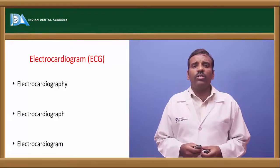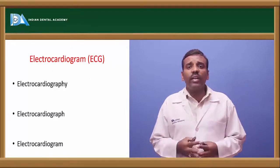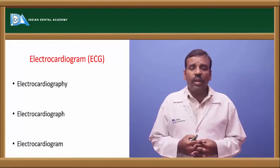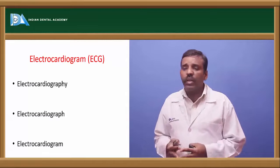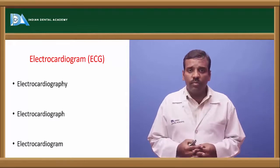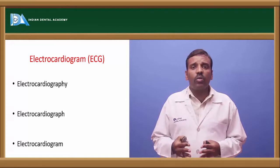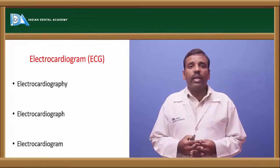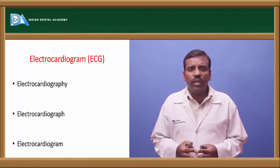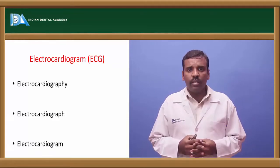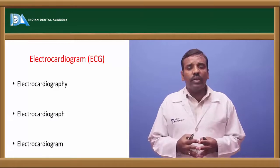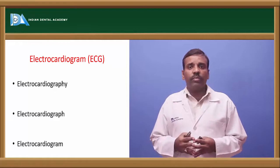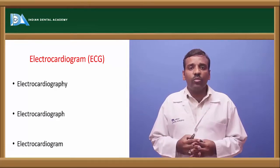ECG is defined in three ways: electrocardiography, electrocardiograph, and electrocardiogram. Electrocardiography is a recording process, electrocardiograph is an instrument, and electrocardiogram is the maintenance of the waves.